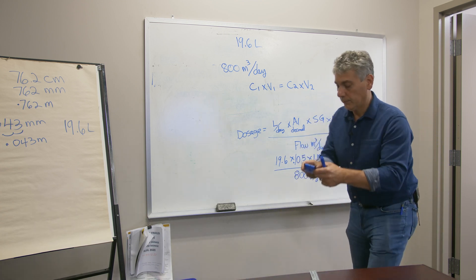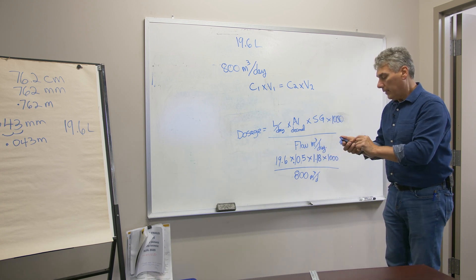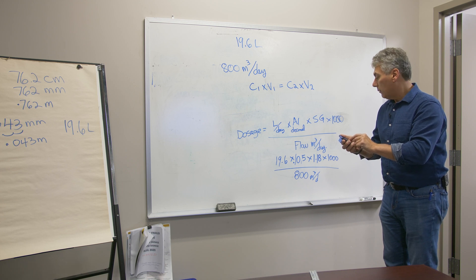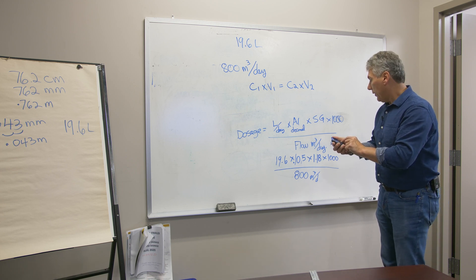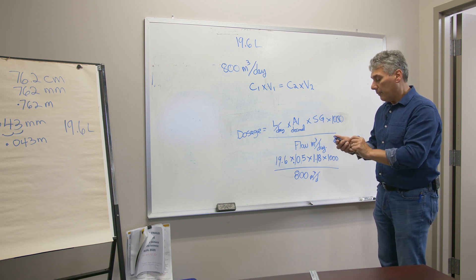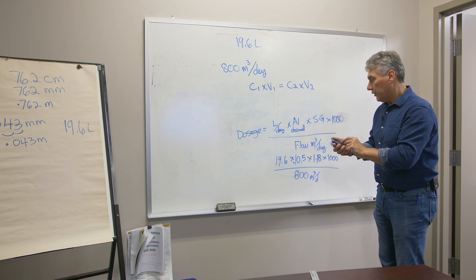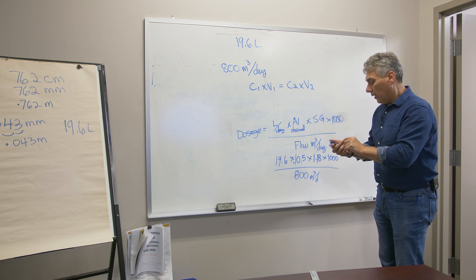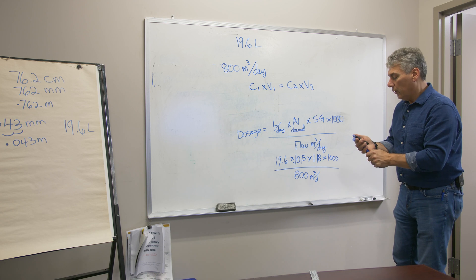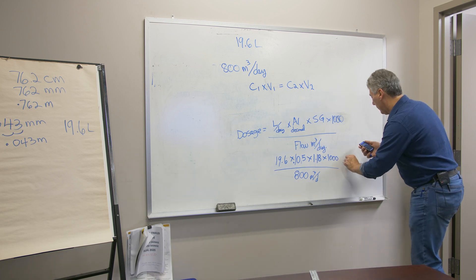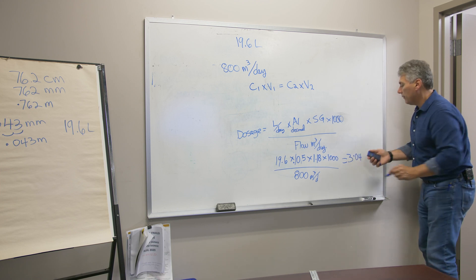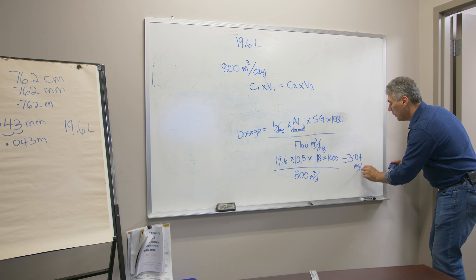Using the calculator: 19.6 times 0.105 (active ingredient as a decimal), times 1.18 (specific gravity), times 1,000 (conversion from meters cubed to liters), divided by 800 meters cubed per day, equals a dosage of 3.04 milligrams per liter.